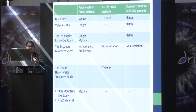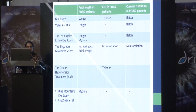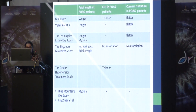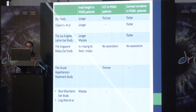The Los Angeles Latino Eye Study suggested that patients with myopic refractive error, longer axial length, and flatter corneas were at high risk of developing primary open angle glaucoma. The Singapore Malay Eye Study suggested that patients with axial myopia and increased axial length are associated with primary open angle glaucoma. In the Ocular Hypertension Treatment Study, no association was found between myopia and POAG, but thinner central corneal thickness was identified as a predictor. The Blue Mountains Eye Study and a study by Lingshen et al. also suggested that myopia is a risk factor for primary open angle glaucoma.